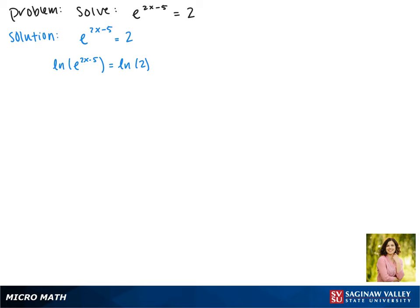Now when we have an exponent inside of our logarithm, we can bring it out front and make it multiplication. So this becomes 2x minus 5 times the natural log of e equals the natural log of 2.